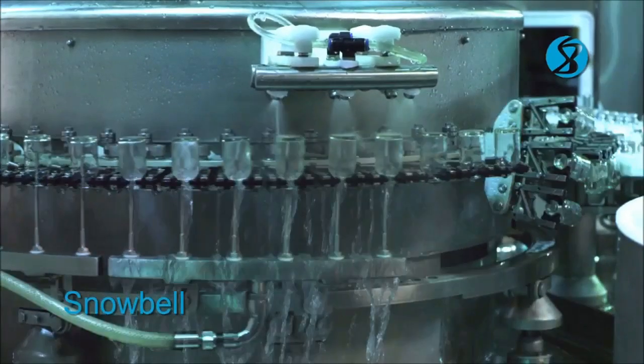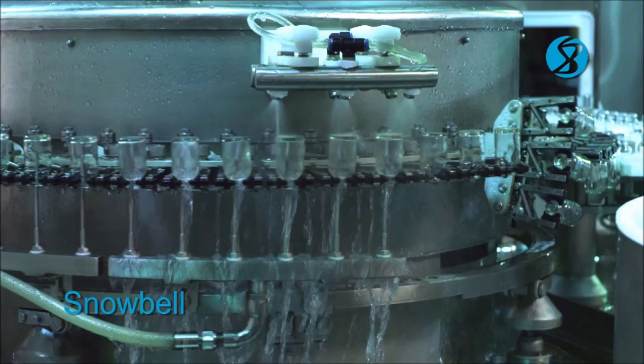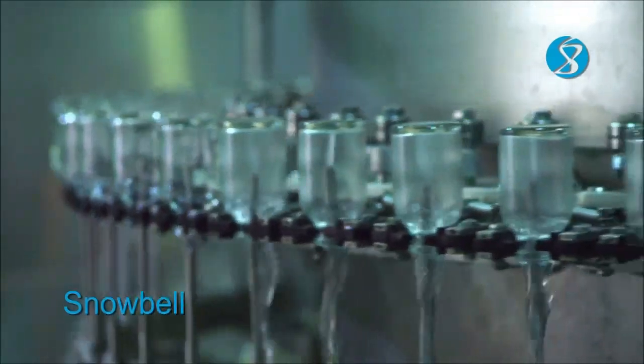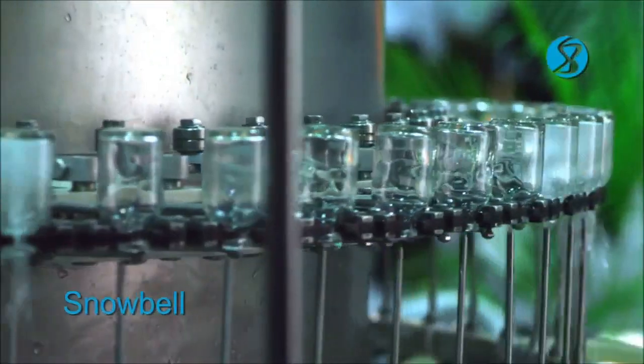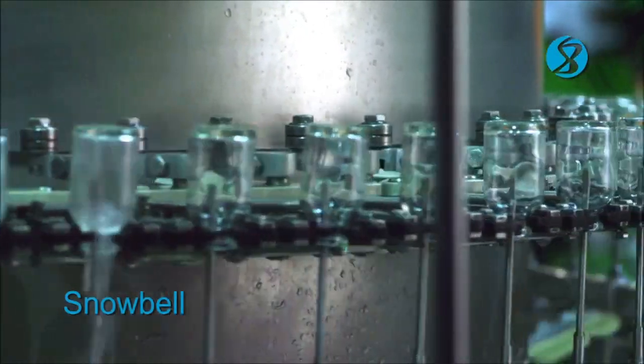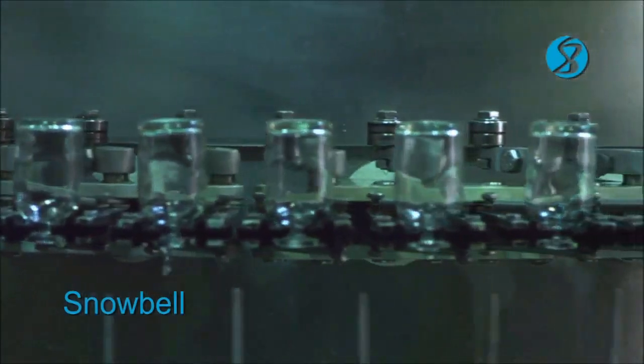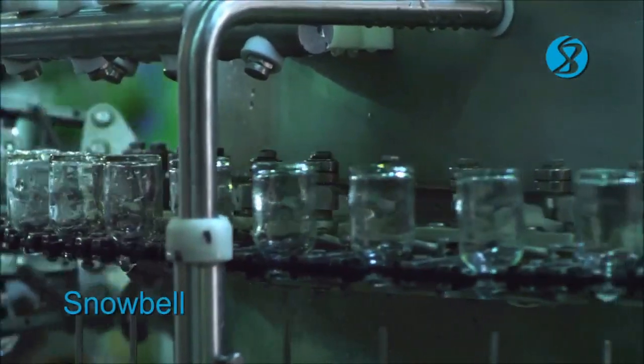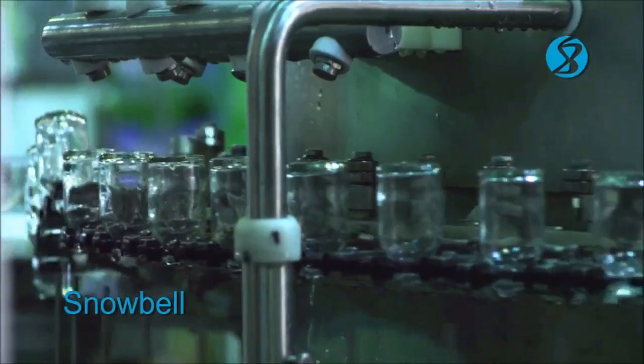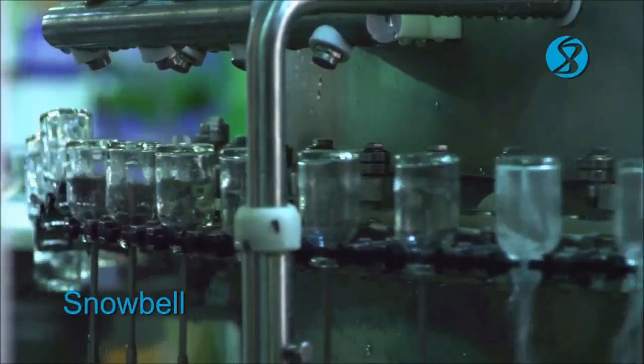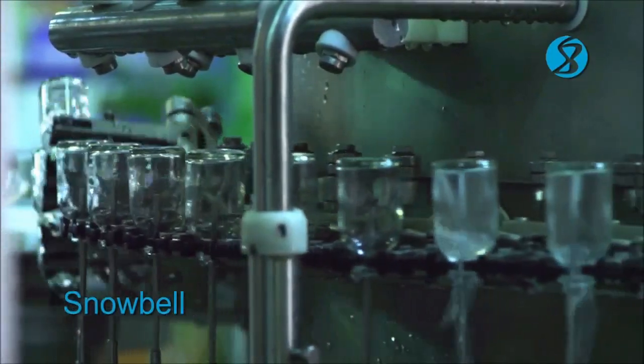The vials are cleaned internally and externally by a spray of recirculated water at the first station, internally blow-dried with compressed air at the second station, sprayed with purified water at the third station, internally blow-dried with compressed air at the fourth station, sprayed with WFI at the fifth station, and finally, internally and externally blow-dried with compressed air.